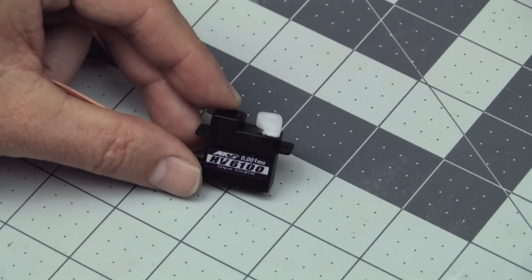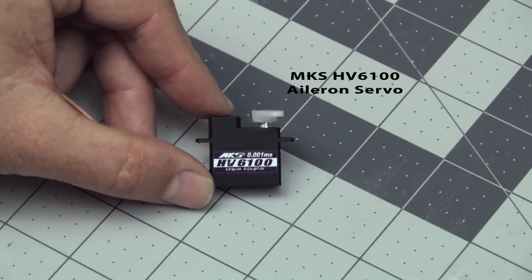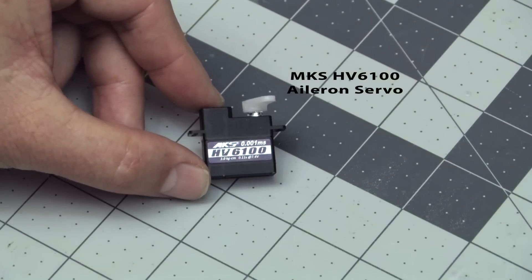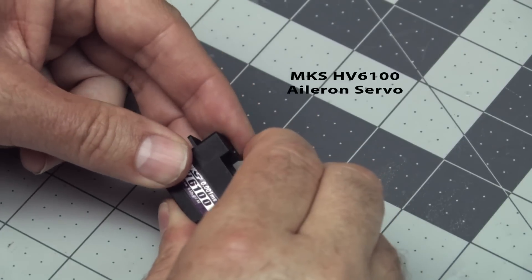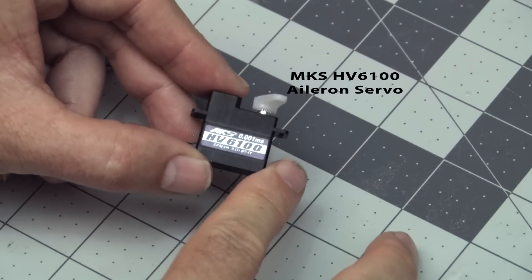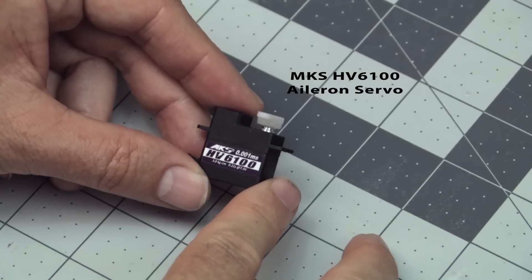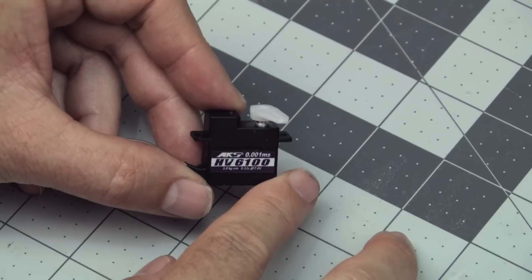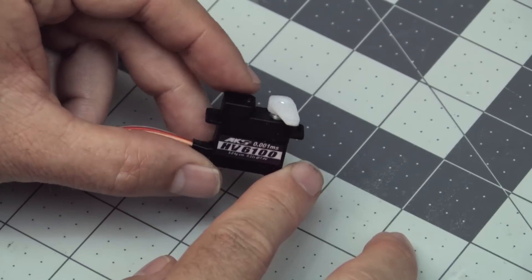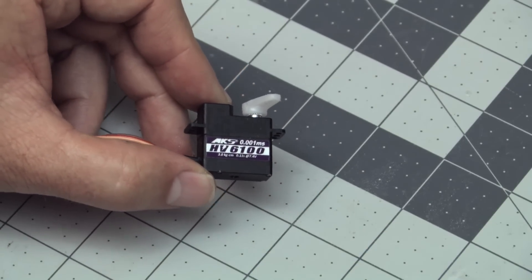Now for the ailerons, we're going to use the light and small but powerful HV 6100s here. They'll run up to 8.4 volts, which is really nice. One of the advantages of HV is that you can run smaller servos. So we can run these in the ailerons and have plenty of torque. I think it's close to 60 ounces of torque at 8.4 volts. So very fast response, very low dead band and very powerful for ailerons and it saves a lot of weight on the tips.